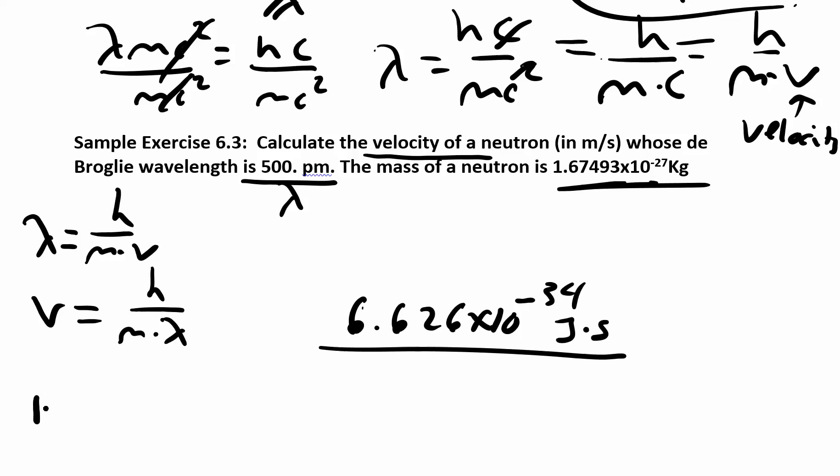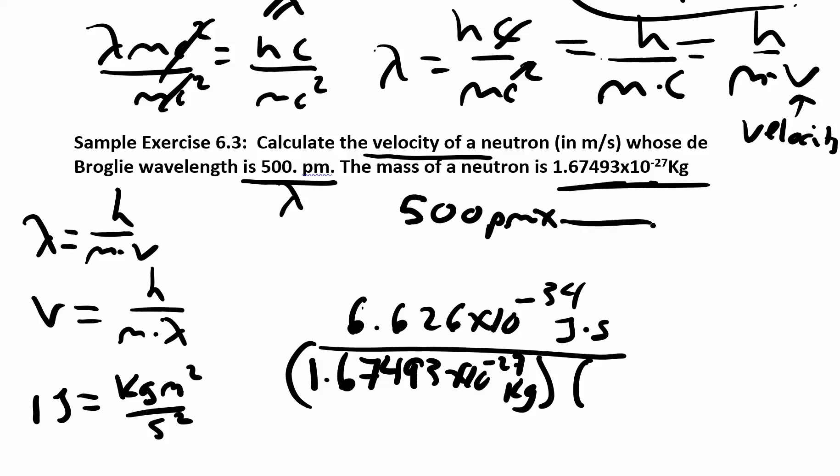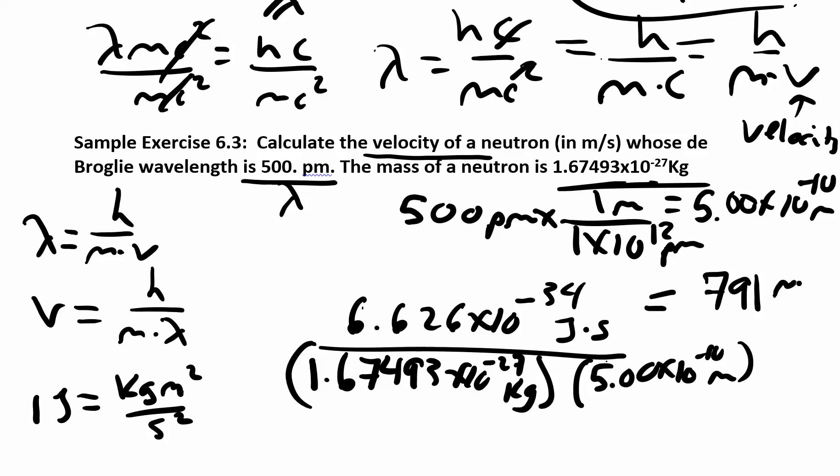When we look at the units of a joule, one joule is a kilogram meter squared per second squared. That's what a joule is. So we want our mass to be in kilograms. We're going to keep that one there. 1.67493 times 10 to the negative 27 kilograms. And our lambda, let's change that one, 500 picometers is 5.00 times 10 to the negative 10 meters. When you work all that out, you're going to get 791 meters per second.